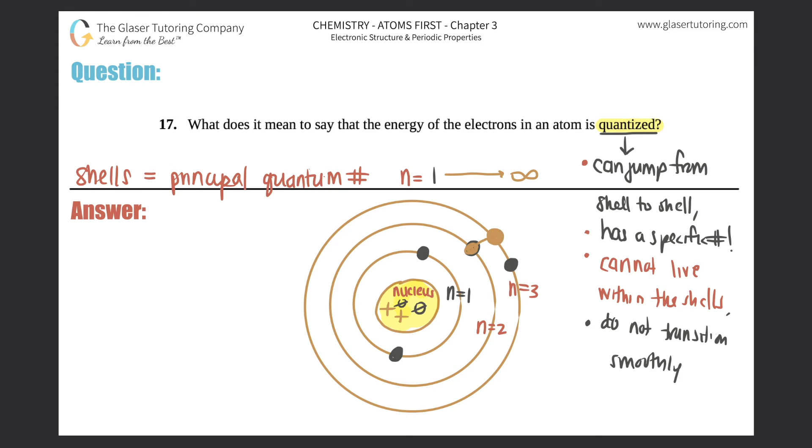So the energy of the electrons: they can jump from shell to shell, it will have a specific number that you can calculate, it cannot live within the shells, and it does not transition smoothly—it jumps.